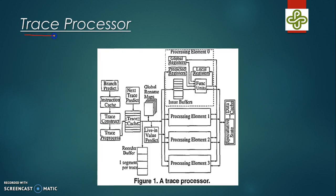Here is the figure of a trace processor. It has a processing element consisting of a trace-sized instruction buffer, multiple dedicated functional units, local register files, and a copy of the global register. There is a block for branch prediction, followed by an instruction cache that stores all instructions. Traces are constructed and then go through trace preprocessing directly into the trace cache.